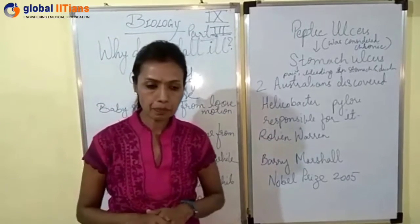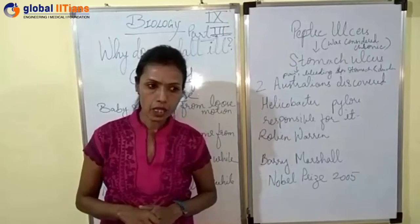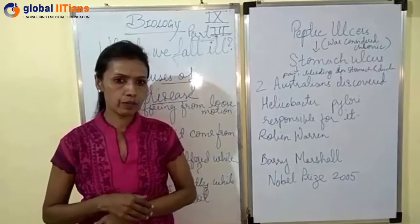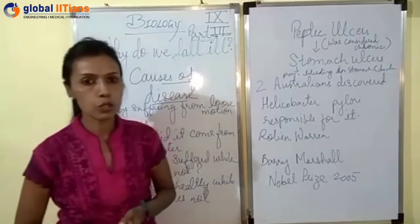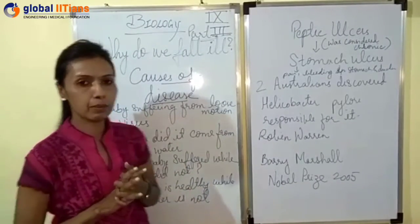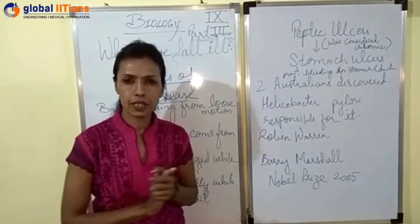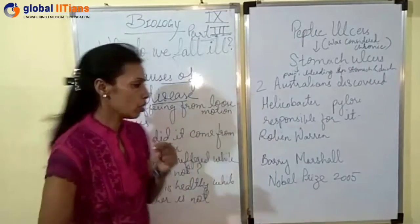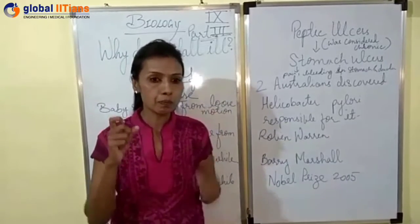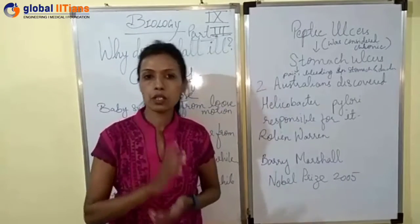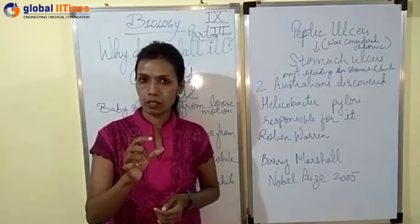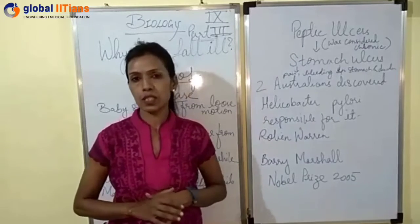Let us take an example. If a baby is suffering from loose motion, what can be the immediate cause? Somebody would say that maybe the baby is suffering from some viral or bacterial infection. So the immediate cause, whenever we talk about it, we are definitely speaking about the pathogen — the harmful microbe — as the immediate cause of the disease.